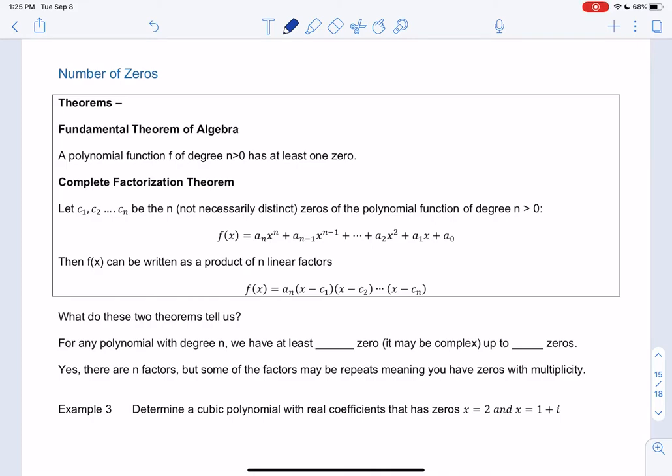So let's do one more theorem and some examples. So this can also tell us the number of 0s. So there's two theorems we're going to use. A polynomial function of degree n greater than 0 always has at least one 0. So it may be complex, it may be irrational, but it always will have at least one 0. So it doesn't have to be a nice 0, but there is at least one.